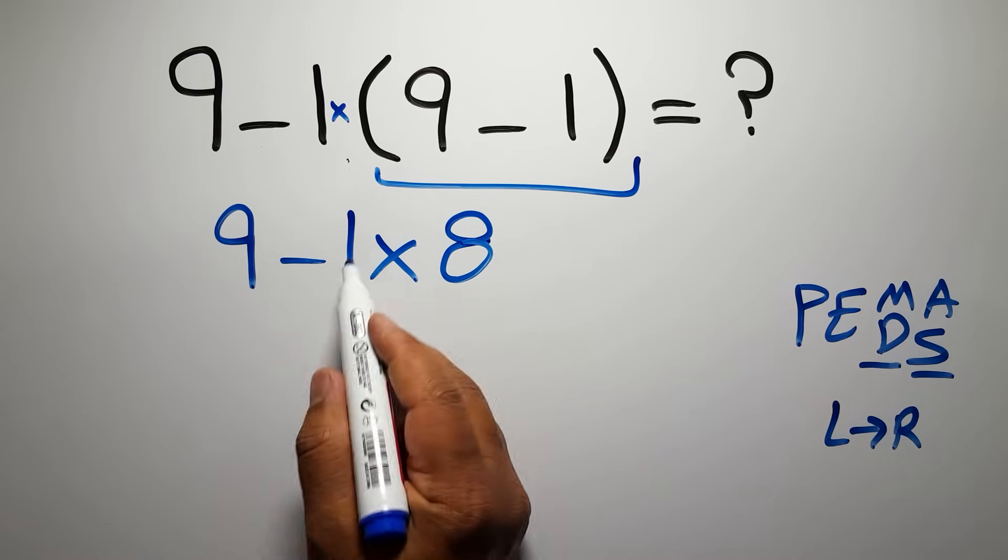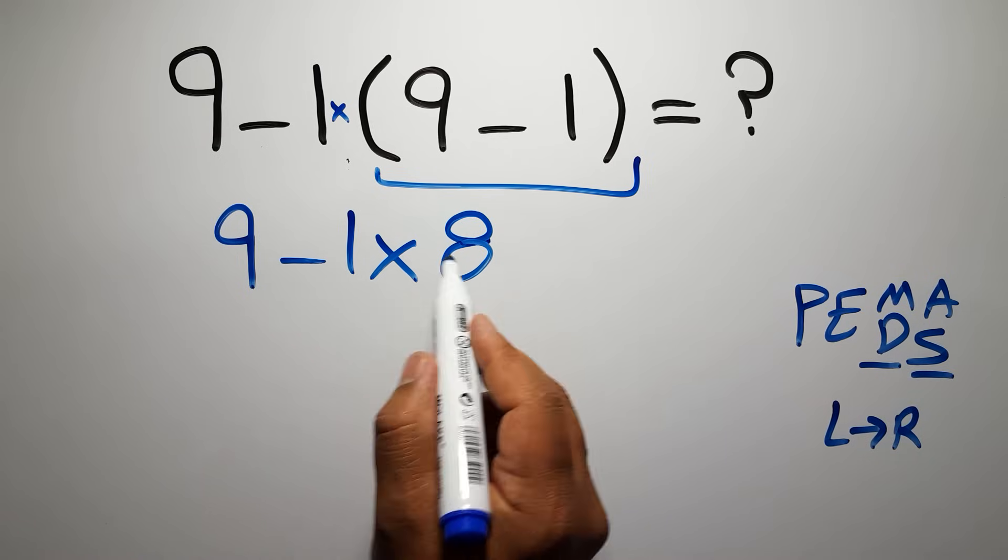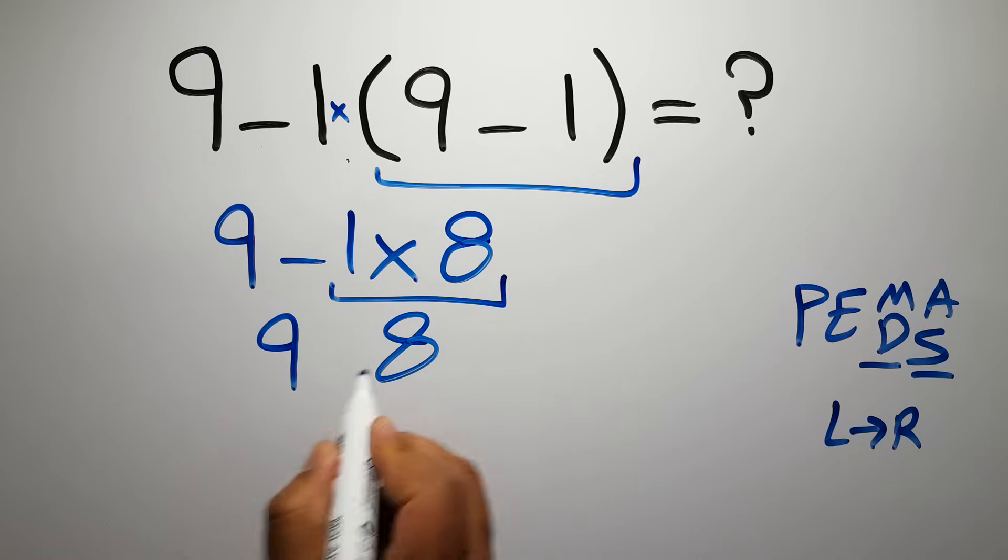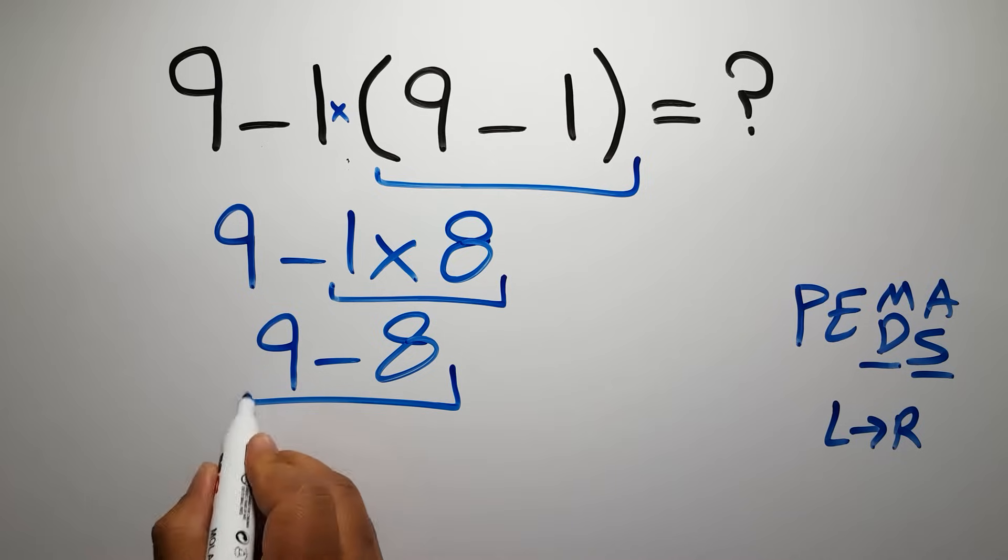So here, first we have to do this multiplication. 1 times 8 gives us 8, so we have 9 minus 8, which equals 1, and this is our final answer to this problem.